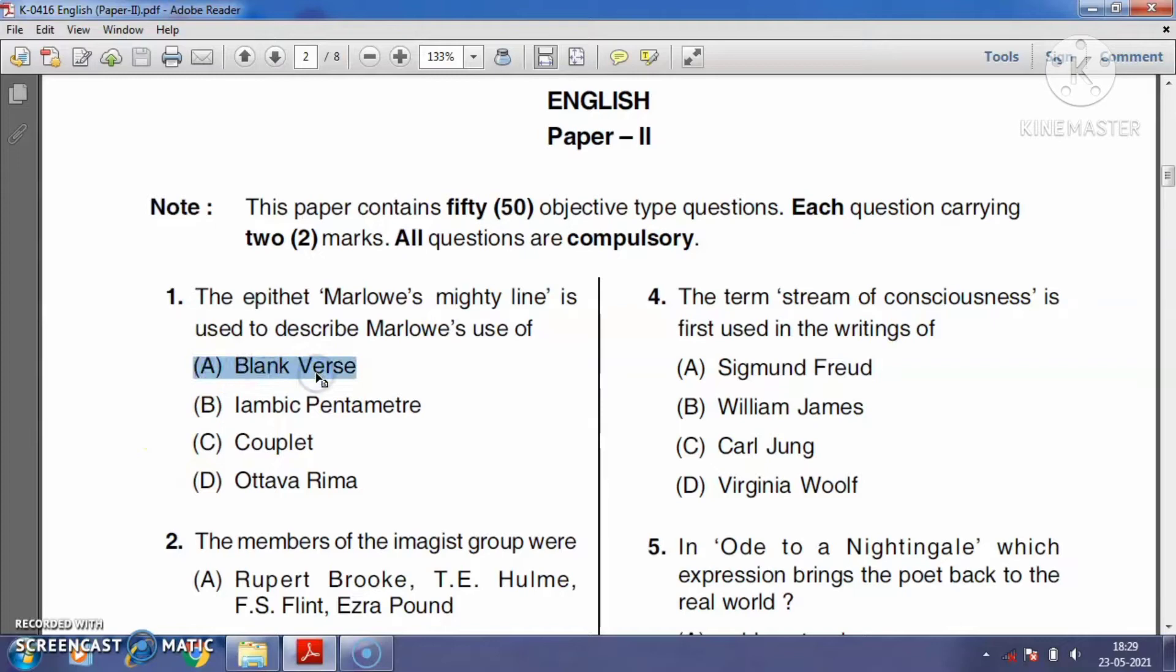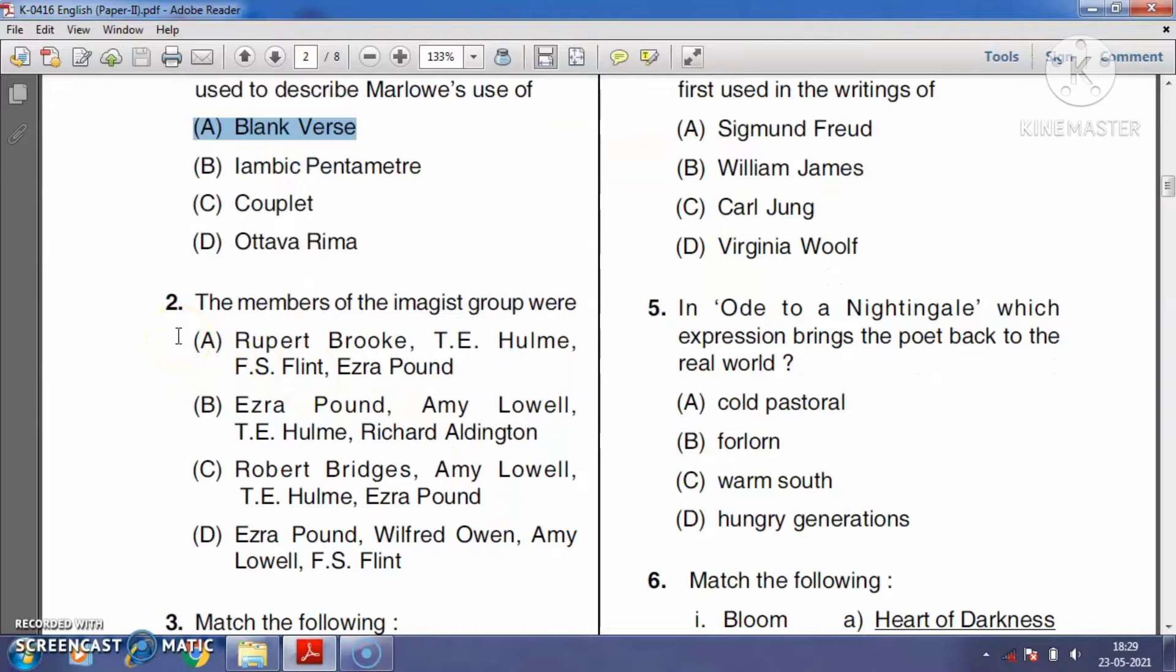Question number two: The members of the Imagist group were Rupert Brooke, Amy Lowell, T.E. Hulme, or Richard Aldington. The Imagist school is a group of American and English poets which originated in the early 20th century. Ezra Pound was the leader of this group, and the other Imagist poets are Amy Lowell, T.E. Hulme, and Richard Aldington. So the right answer is option B.